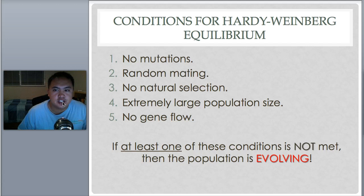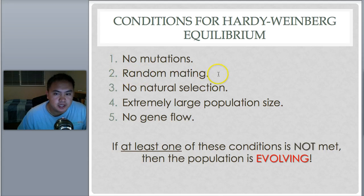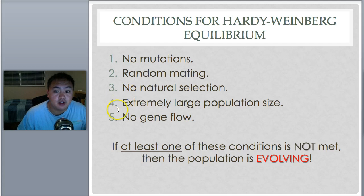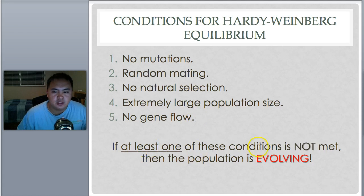To reach Hardy-Weinberg equilibrium, five conditions must be met: no mutations; random mating, meaning anyone can possibly produce offspring; no natural selection — nothing like the beaks and the finches; a very large population size, not a small one; and no gene flow, meaning no outside force affecting the genetics. If at least one of these conditions is not met, then the population is evolving. So if there are mutations, enforced mating, natural selection, or a small population size, the population is evolving.